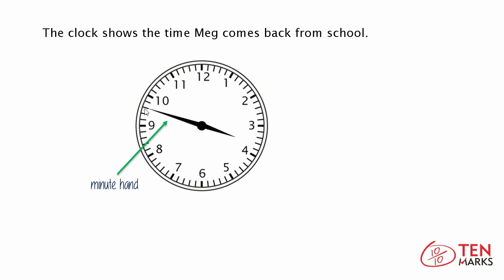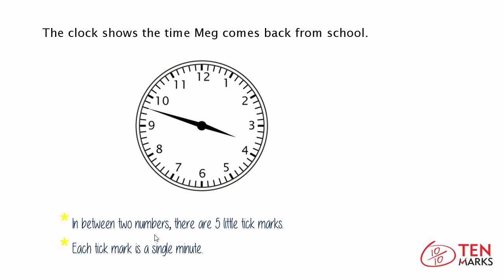The longer hand is called the minute hand and it tells you the number of minutes. Each number on the clock tells you that five minutes have passed, so if the minute hand moves from three to four, five minutes have passed. You can count and find the number of minutes by skip counting. Starting at 12, you can skip count by fives to figure out the number of minutes quickly. In between two numbers there are five little tick marks, and each tick mark is a single minute.